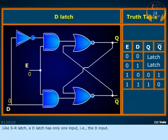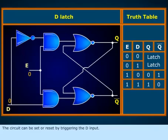Like an SR latch, a D latch has only one input, i.e. the D input. The circuit can be set or reset by triggering the D input.